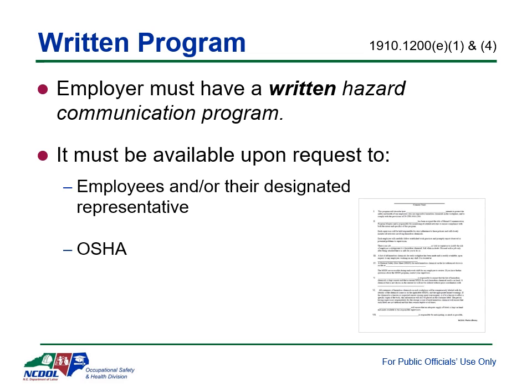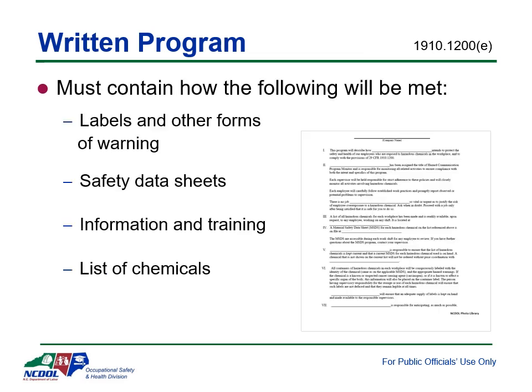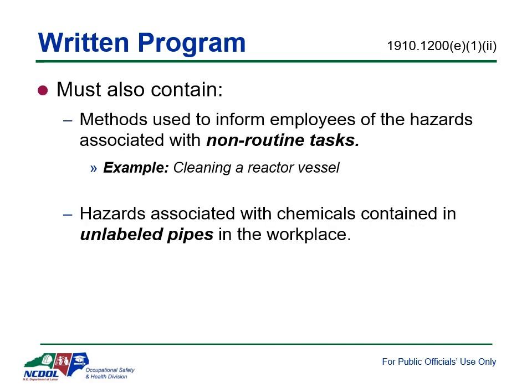The HazCom written program must contain at a minimum: the label systems and other forms of warning in use in the facility; safety data sheets for each hazardous chemical; information and training for workers on the hazards of the chemicals in their workplace and how to protect themselves; and a list of the hazardous chemicals known to be present in the workplace, which may be compiled for the workplace as a whole or for individual work areas. The written plan must also include methods the employer will use to inform employees of the hazards of non-routine tasks — for example, the cleaning of a reactor vessel — and hazards associated with chemicals contained in unlabeled pipes in their work areas.